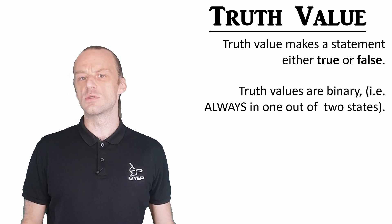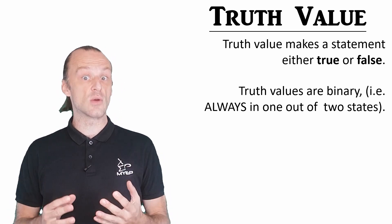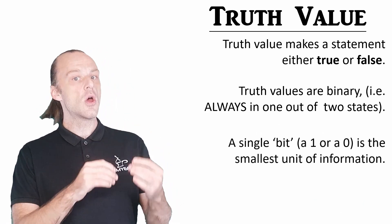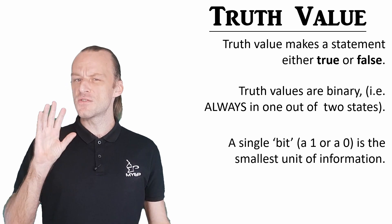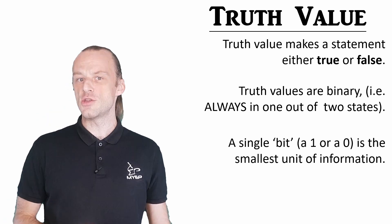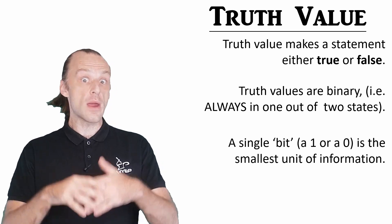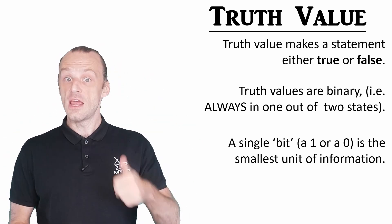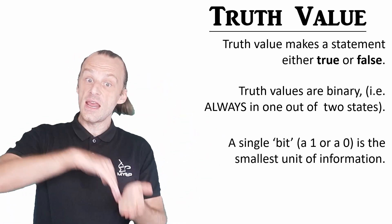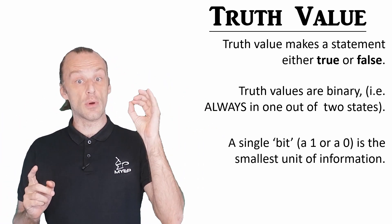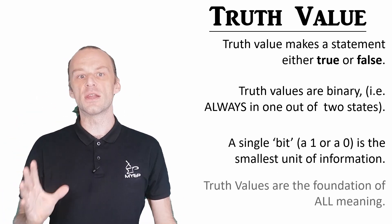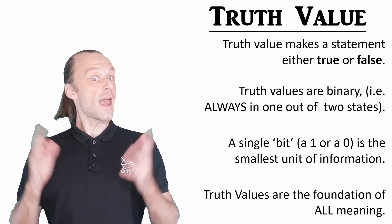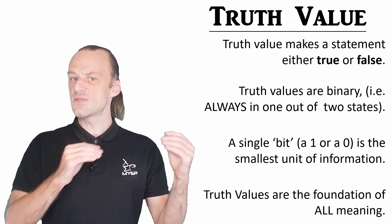Computers also use binary. The basic unit of computer language is the bit or the binary digit, and that is either a one or a zero. A bit is the most fundamental unit of information. It is the smallest amount of change where it is possible to communicate anything at all. Up or down. Yes or no. In or out. One or zero. Truth values are very simply the foundation of all meaning. They are the only way that it's possible for anything we say to transfer information.